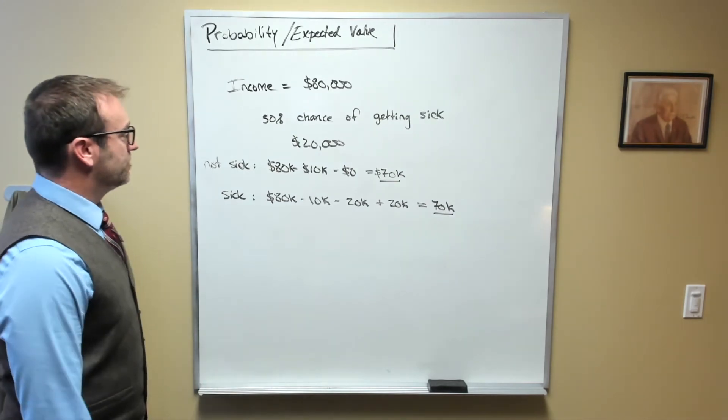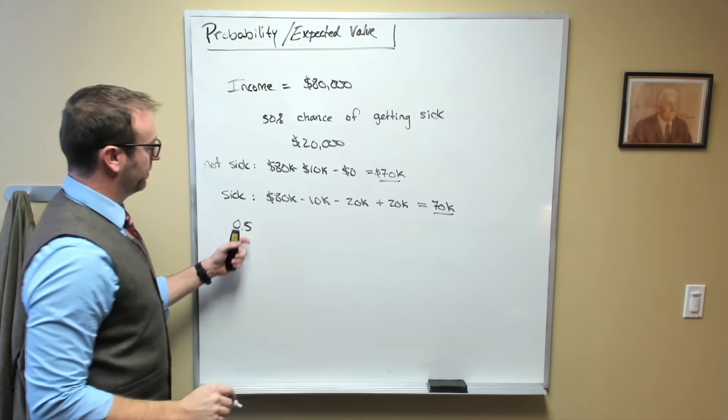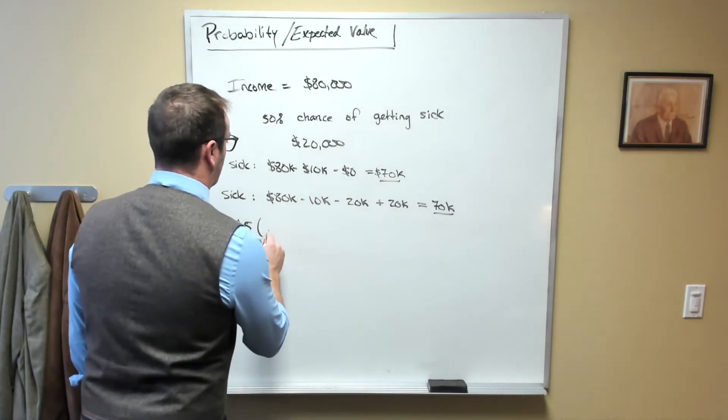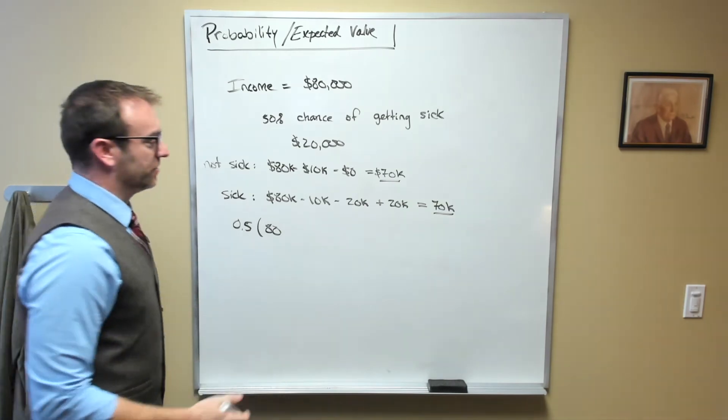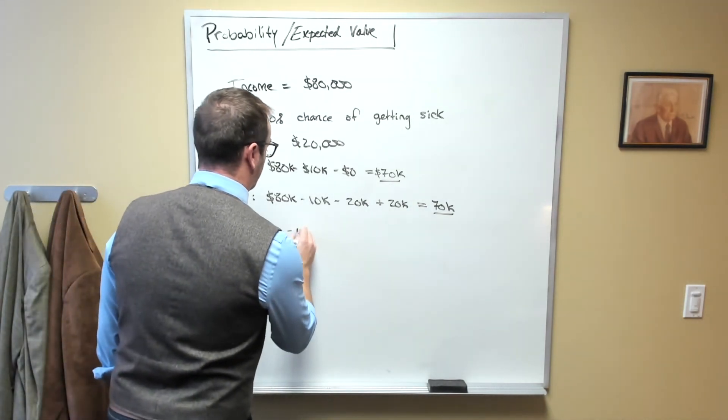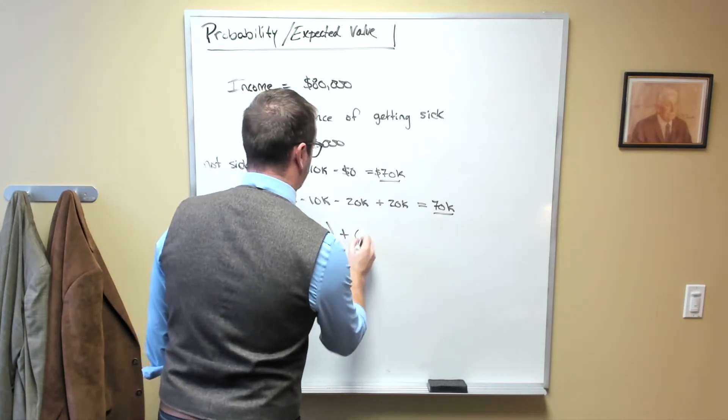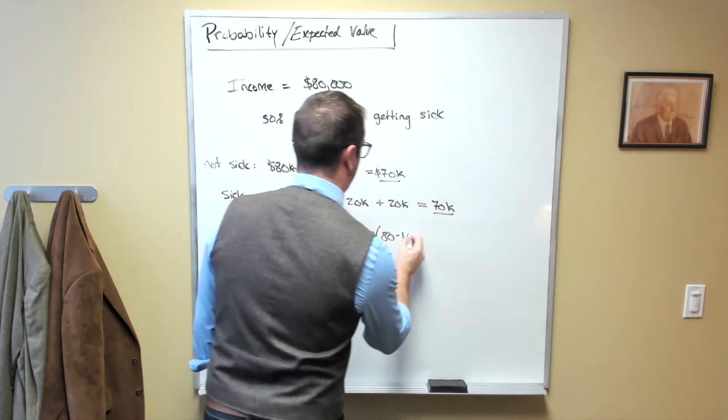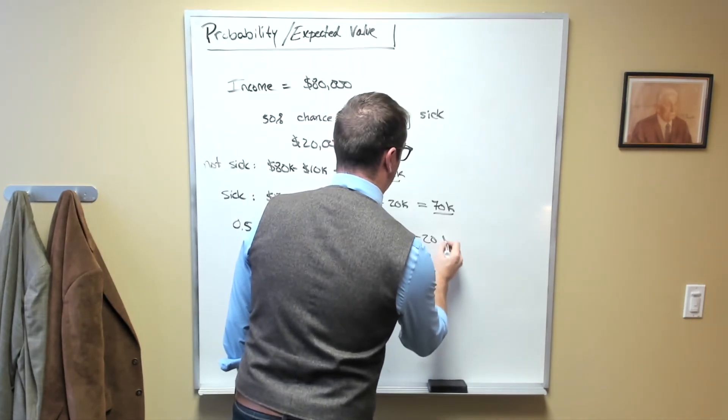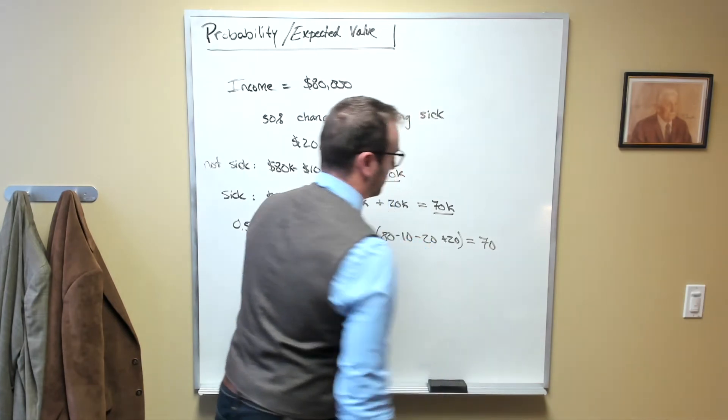Mathematically, we could show this by just simply saying 0.5, which is the probability that you will not be sick, times 80,000, and I'm just going to write 80, all these numbers are in thousands, minus 10 minus 0 plus 0.5 times 80 minus 10 minus 20 plus 20, and that's also going to be equal to $70,000.